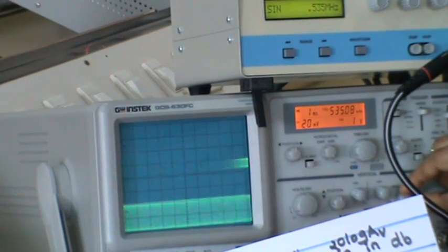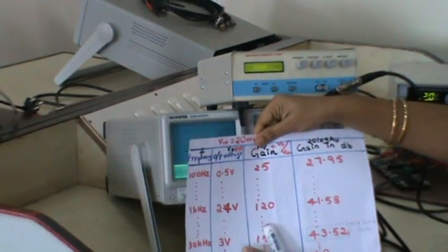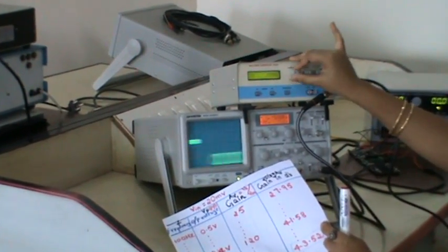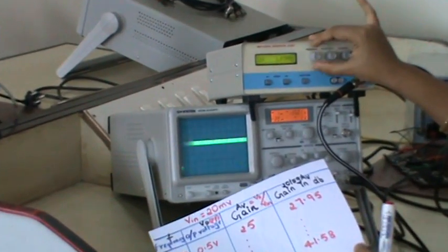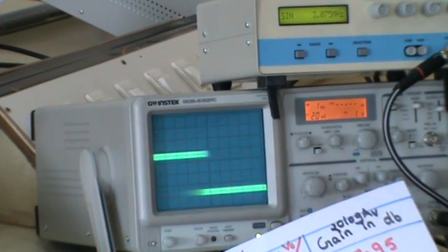We can see that voltage which is around 2 volt again. This is 2 volt and finally, at around 3 megahertz, the voltage is getting reduced which is around 0.5 volt.